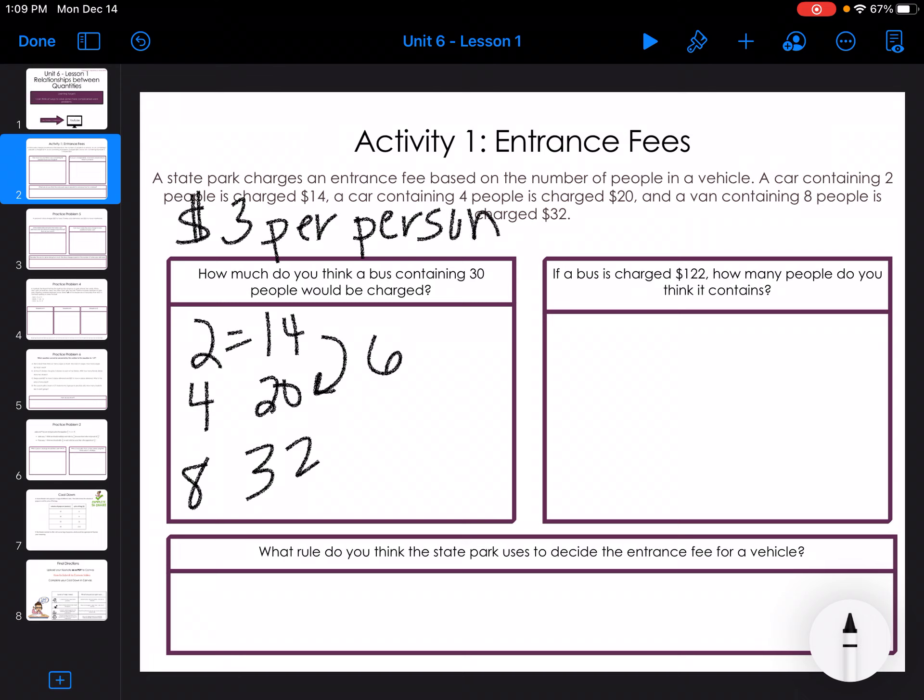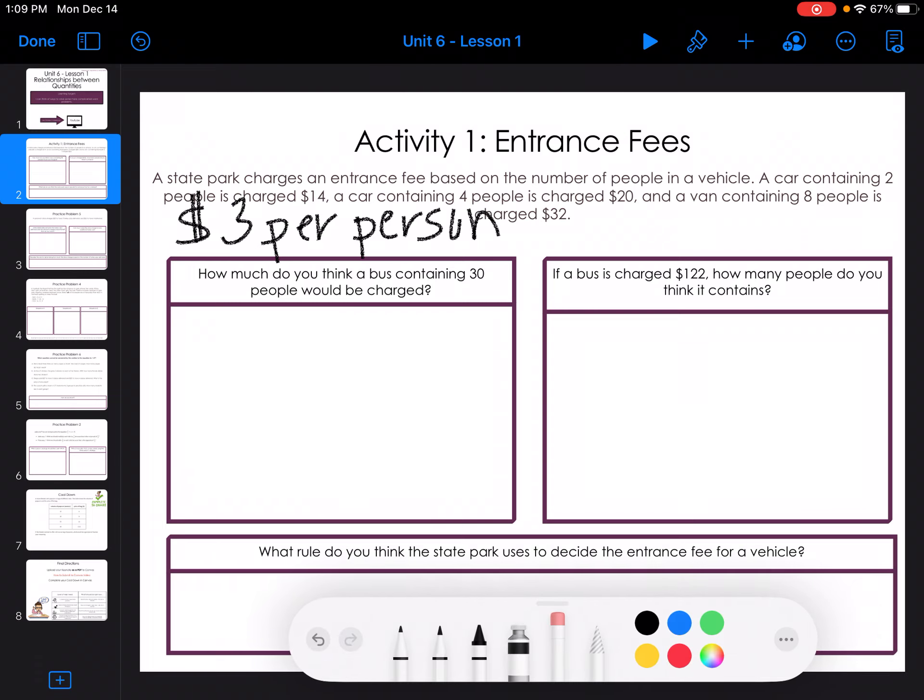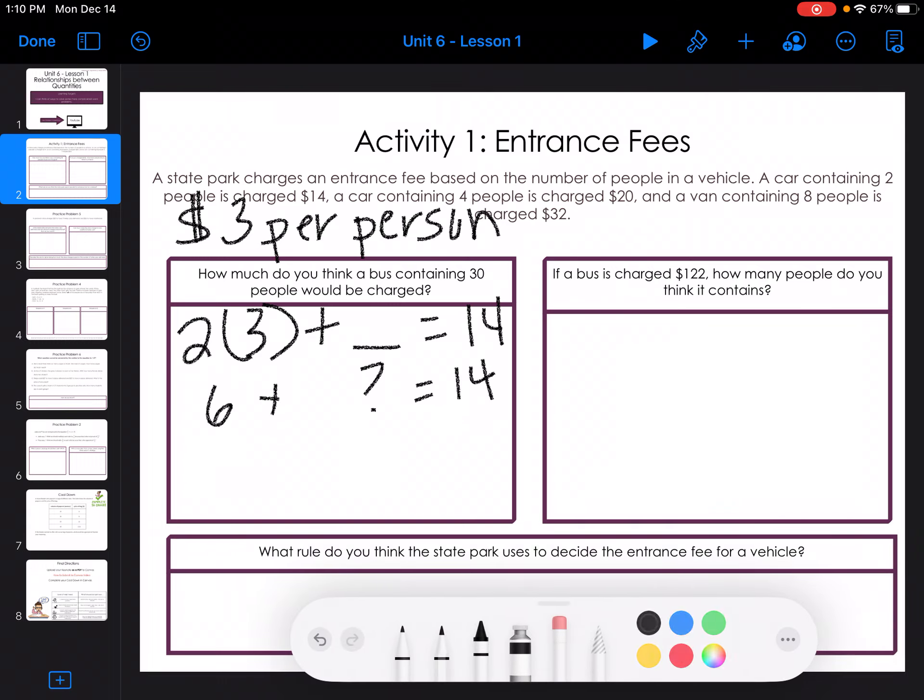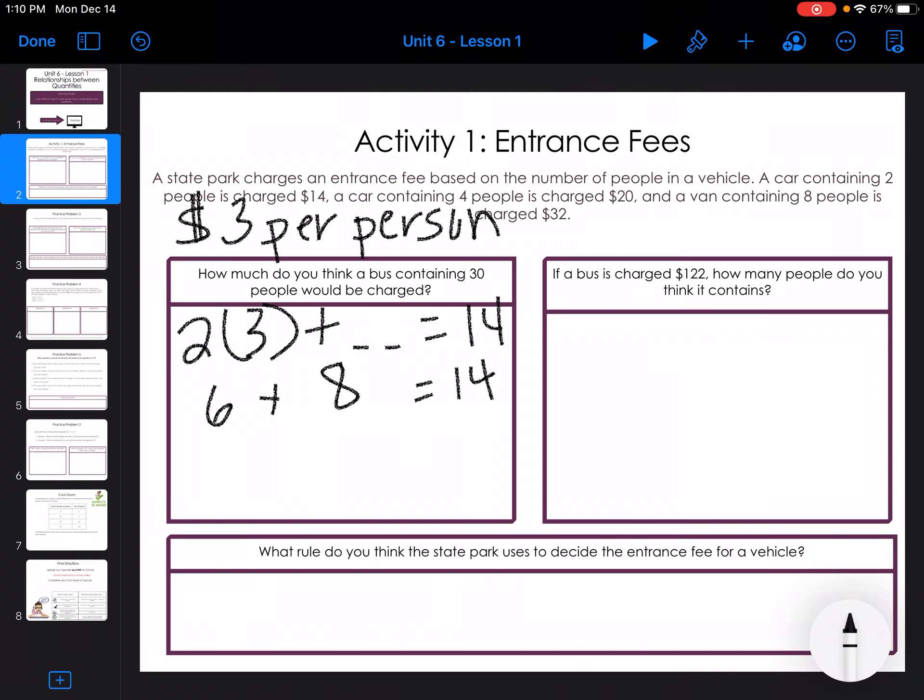So that means that it would be two times three plus something equals 14. So six plus something equals 14. So it's eight. It's $8 for the car, for the actual vehicle to park.